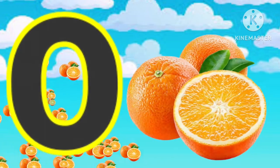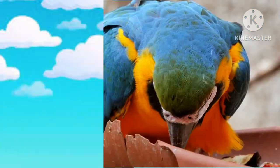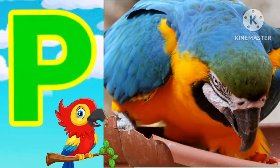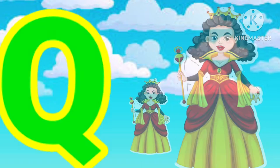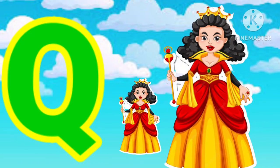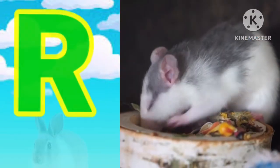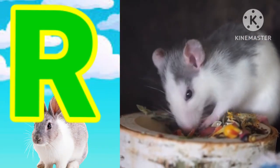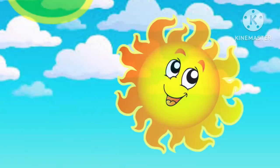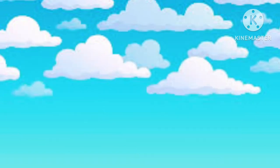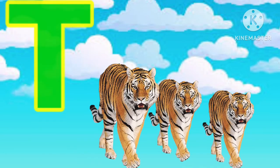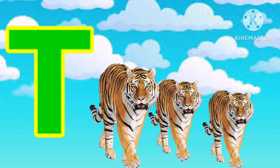O for orange, B for parrot, Q for queen, R for rat, S for sun, T for tiger.